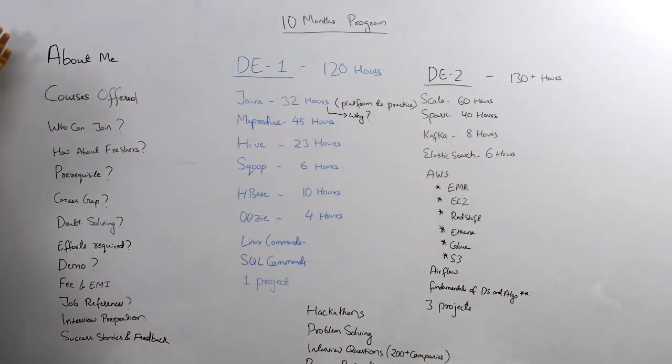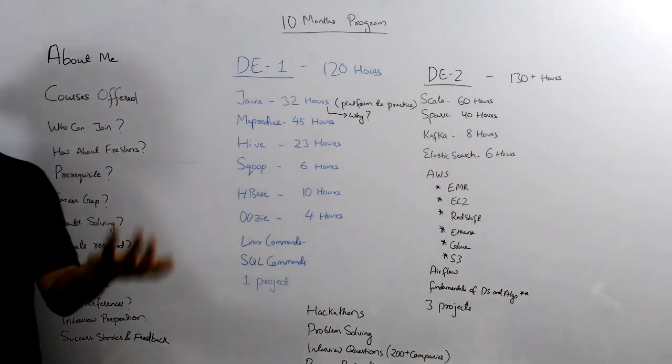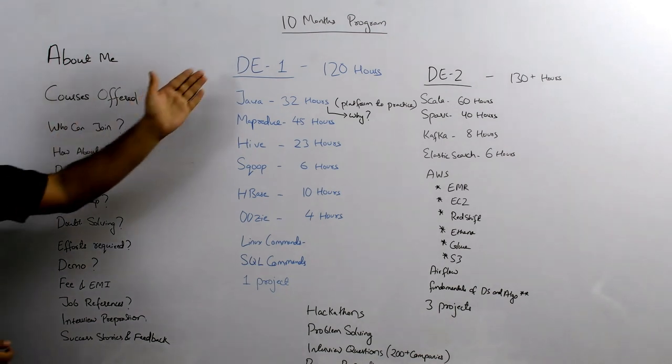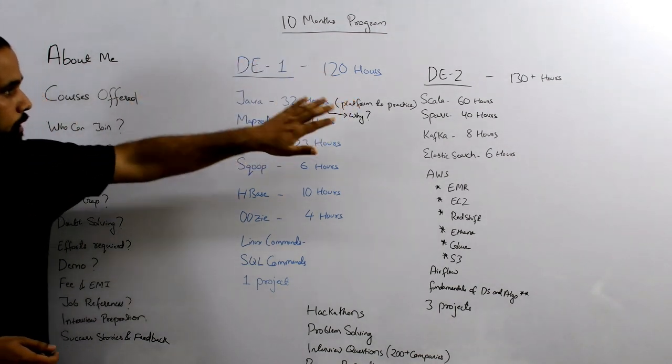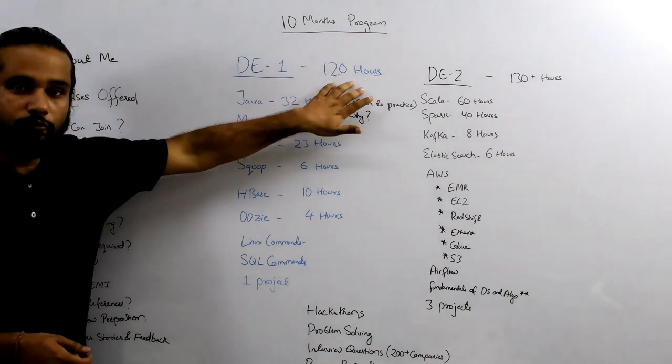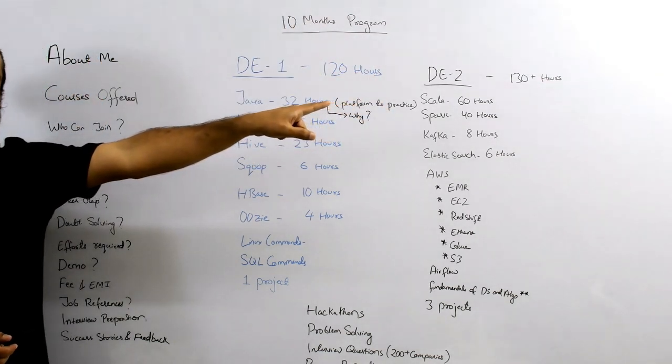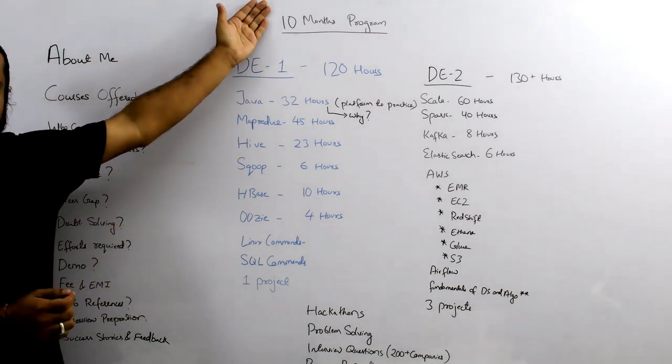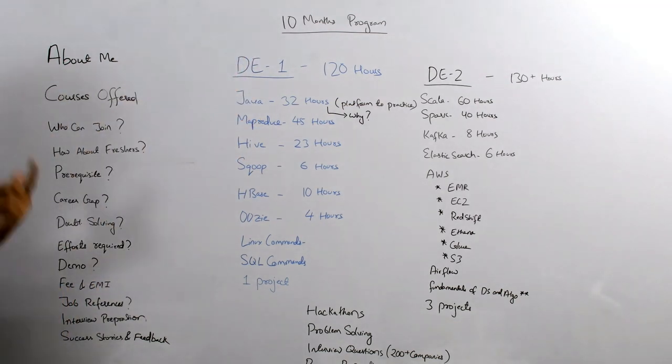Let's talk about a couple more things. About courses we're offering: DE1 goes for 120 hours over five months, DE2 goes for another 130 hours over five months. In minimum, you need 10 months of effort.